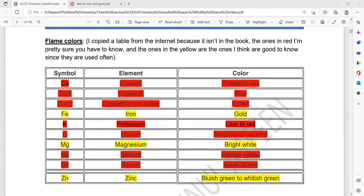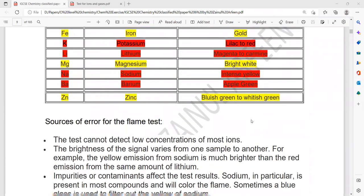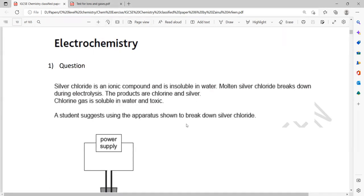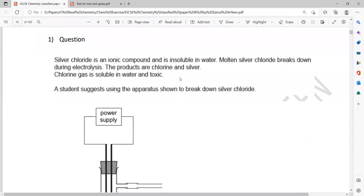Then the flame test, you have to memorize certain flame colors. We start with our first topic from electrochemistry. In this question, silver chloride is an ionic compound and is insoluble in water. Molten silver chloride breaks down during electrolysis. The products are chlorine and silver.